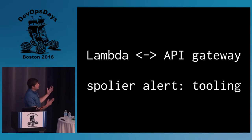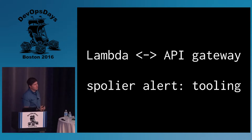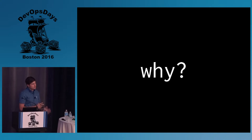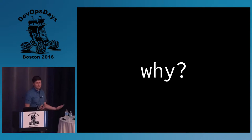You need to have these two things — Lambda and API Gateway — talk to each other, and they mostly do when you do all the clicking around, but there are a number of gotchas. Spoiler alert: I'm going to talk about that later in tooling. So, why? Why would we actually do this? We've got these tools — are they actually any good?